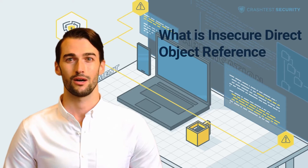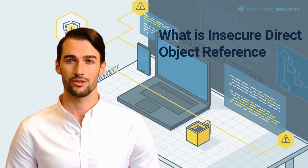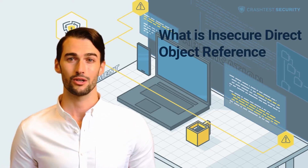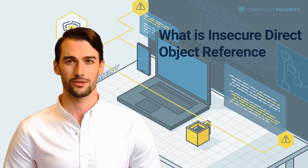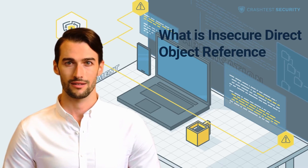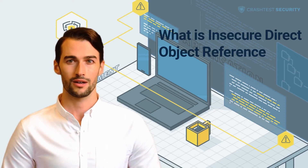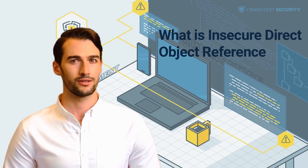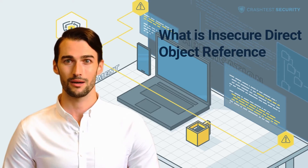An insecure direct object reference flaw occurs when the server fails to validate incoming HTTP requests to access objects. Since the application cannot determine the authenticity of the user trying to access an object, it reveals the underlying object details to the attackers. Attackers thereby gain unauthorized access to the object and modify the value of the ID parameter for the object to fulfill their adversary acts. As a result, users can be redirected to access harmful pages without their knowledge.